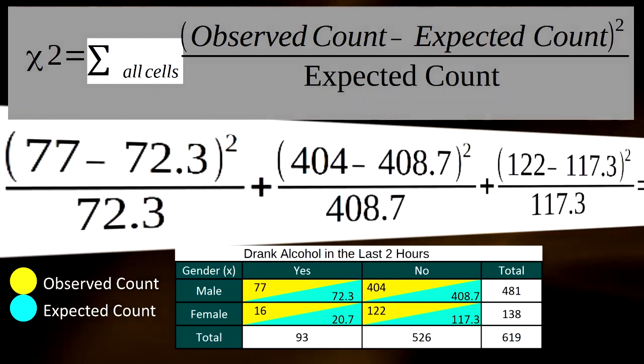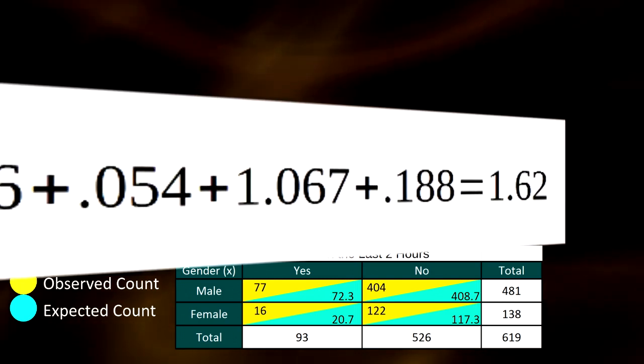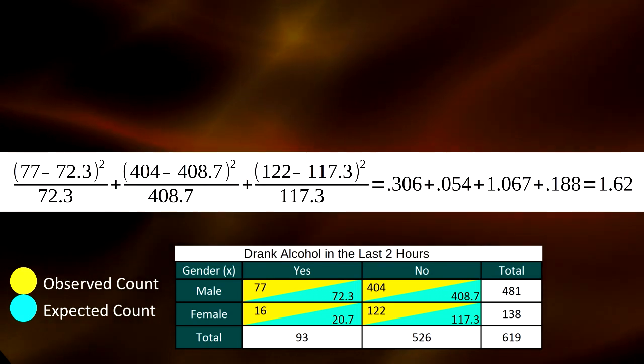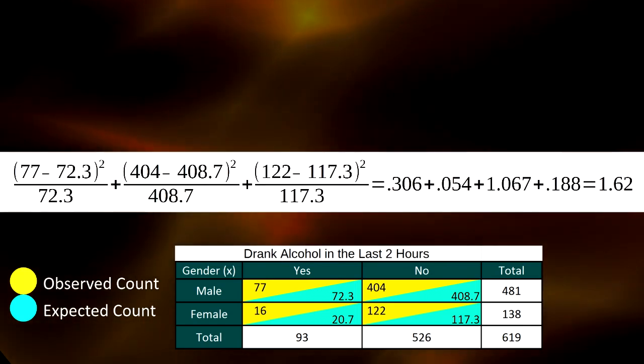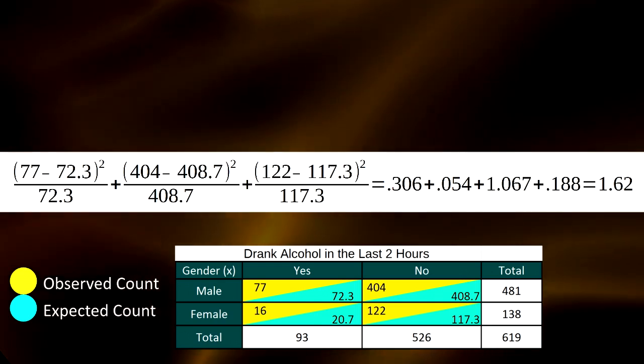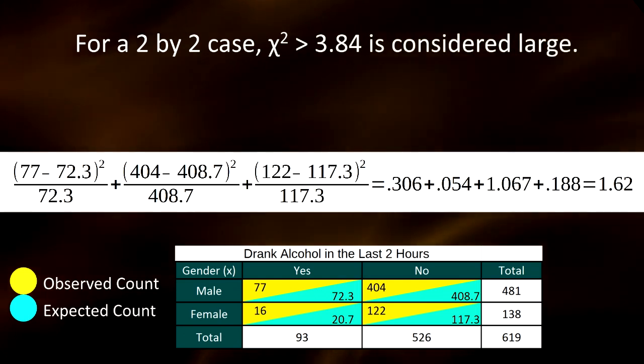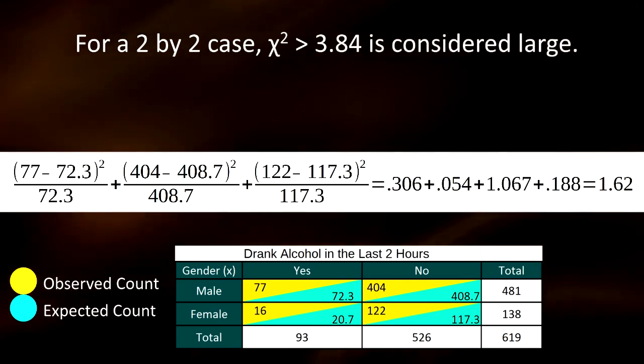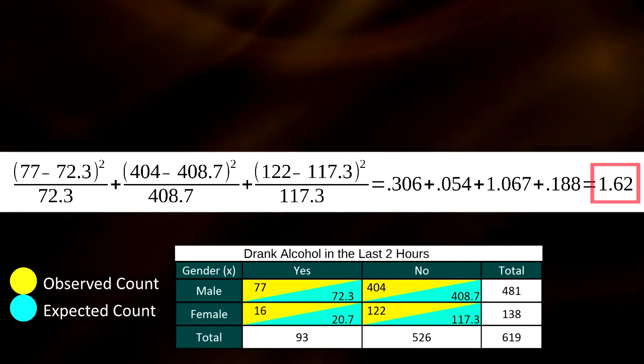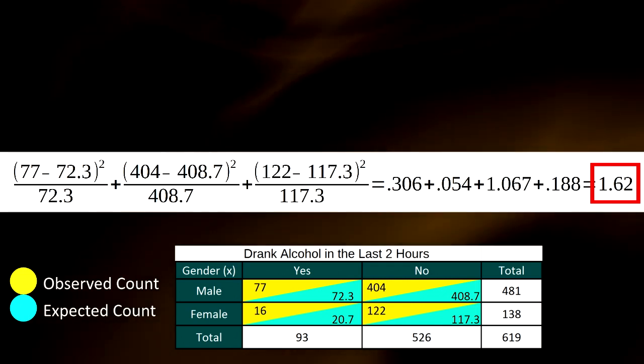Once the chi-square statistic has been calculated, we can get a feel for its size. Is there a relatively large difference between what we observe and what the null hypothesis claims? Or a relatively small one? It turns out that, for a two-by-two case like ours, we're inclined to call the chi-square statistic large if it's larger than 3.84. Therefore, our test statistic is not large, indicating that the data are not different enough from the null hypothesis for us to reject it.